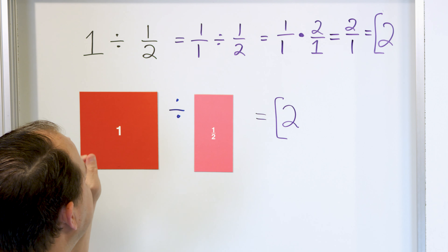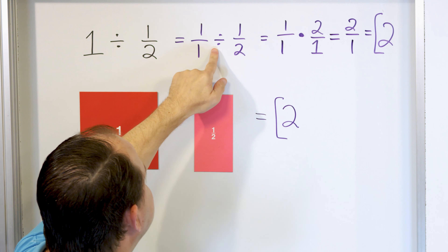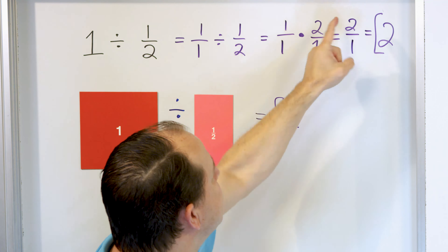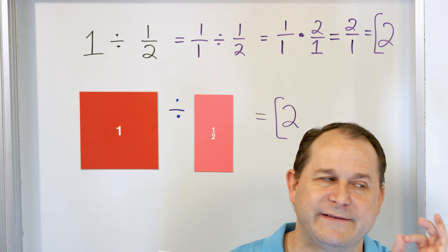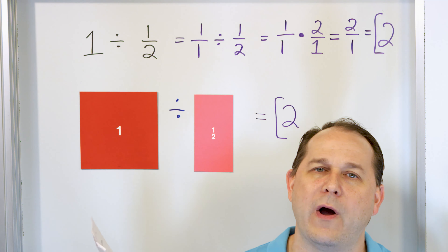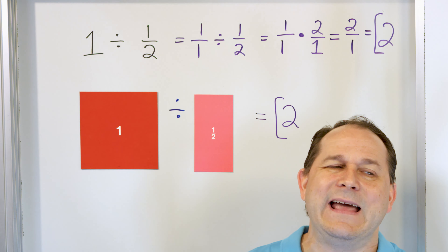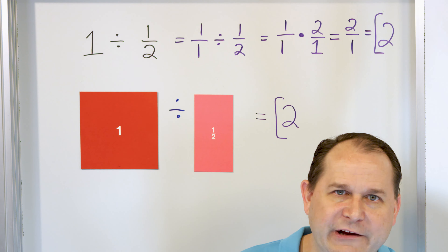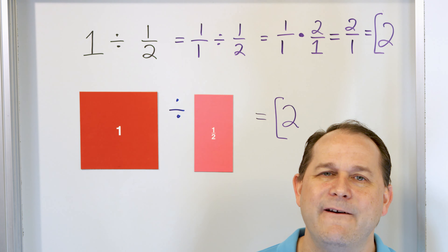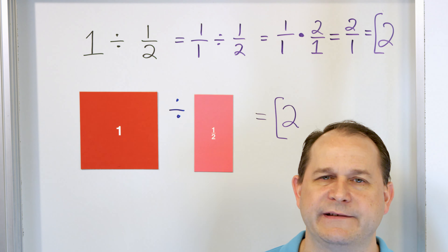So we know how to divide fractions mechanically. Every fraction division, all you're going to do is change it to multiplication, flip the second fraction over, then multiply and simplify. Every time you divide fractions — any time, no matter what fraction you're dividing, or even if it's a mixed number — all you do is always change it to multiplication and flip over the second fraction and then multiply. So every fraction division problem will just become multiplication. Every one, no exceptions.